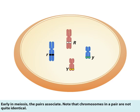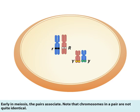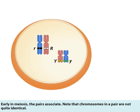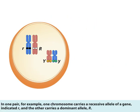Early in meiosis, the pairs associate. Note that chromosomes in a pair are not quite identical. In one pair, for example, one chromosome carries a recessive allele of a gene, indicated little r, and the other carries a dominant allele, big R.